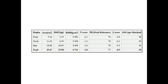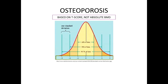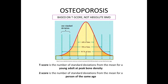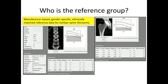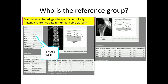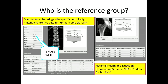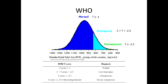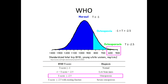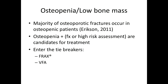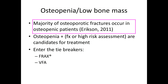Looking further at the tabular data, we see T-score and Z-score columns. Osteoporosis is based on T-score — the number of standard deviations from the mean compared to a young adult at peak bone mineral density — while the Z-score represents the number of standard deviations from the mean for a person of the same age. The WHO defines a T-score of minus 2.5 or less as osteoporosis, indicated for treatment. A score between minus 1 and minus 2.5 is considered low bone mass or osteopenia. The majority of osteoporotic fractures actually occur in osteopenic patients, simply because there are many more osteopenic patients as defined by the bell curve.